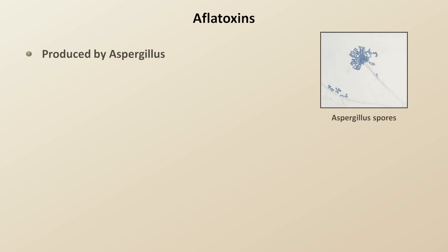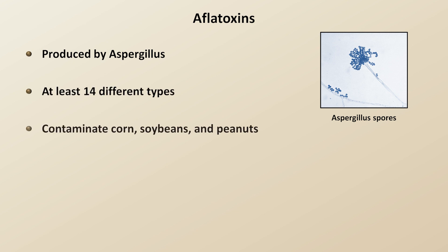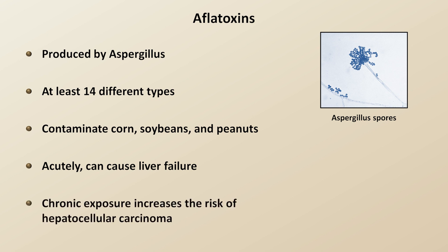The next group of mycotoxins are aflatoxins. These are produced by Aspergillus species. There are at least 14 different types, and they can contaminate corn, soybeans, and peanuts. When consumed in large amounts, they can cause liver failure, which is very rare. However, while chronic exposure is typically asymptomatic, it is also both more common and significantly increases the risk of hepatocellular carcinoma.